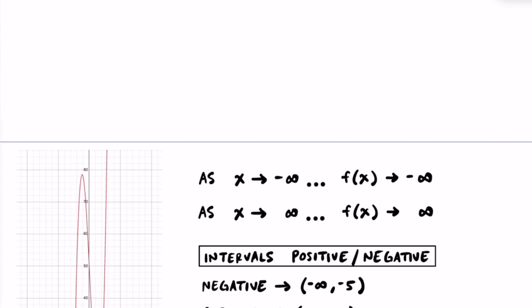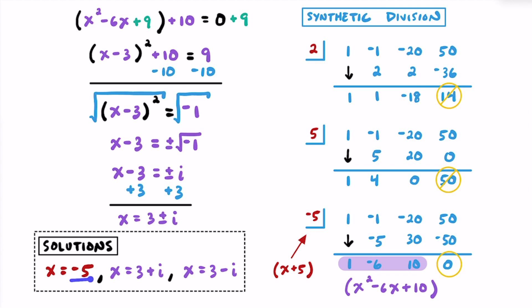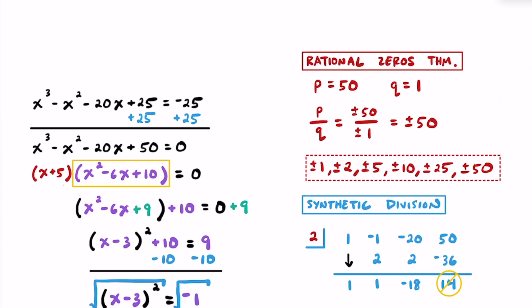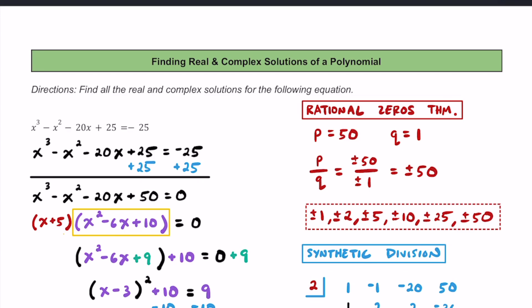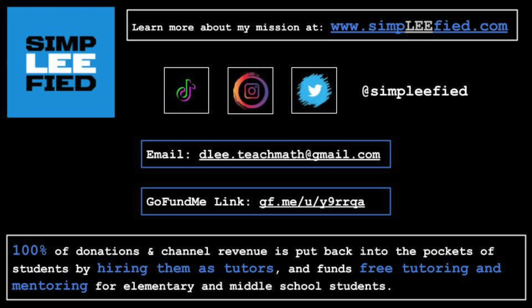To summarize: the three solutions were x equals negative 5 as our real rational zero, and 3 plus i and 3 minus i as complex or imaginary solutions. The key strategy is to use the rational zeros theorem and synthetic division to find one factor of a cubic polynomial — then you're left with a quadratic, which you can solve using factoring, the quadratic formula, or completing the square. Hopefully you found the video helpful — please give it a thumbs up and share with a classmate!